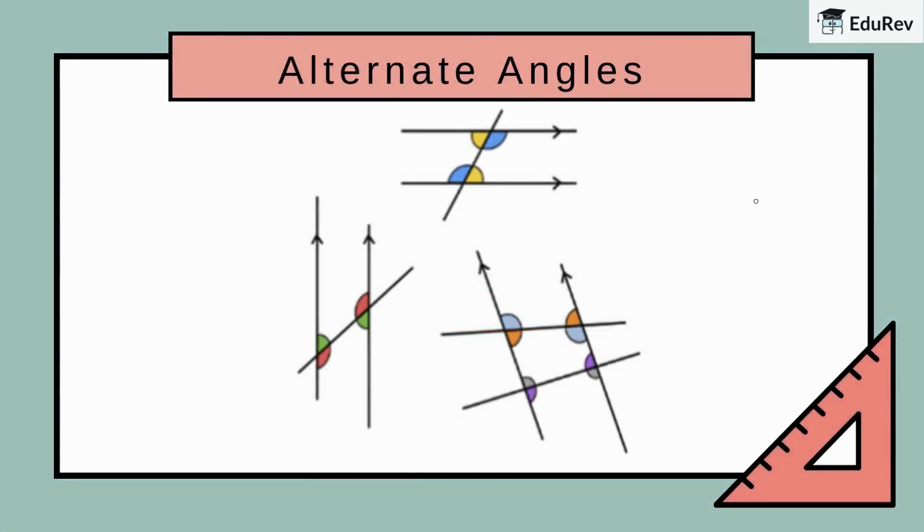Next, let's shift our focus to another fascinating angle relationship called alternate angles. How do these angles interact with each other when lines are parallel? All the same color angles are pairs of alternate angles and are always equal if the lines are parallel.